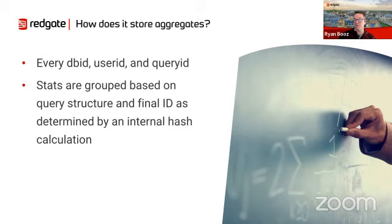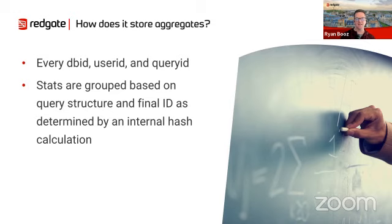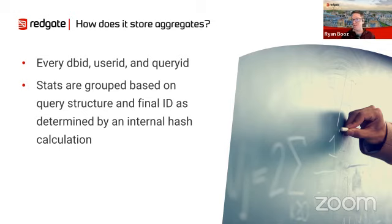Now let's look at PG stat statements, what most people will use day-to-day to debug their application. It stores aggregates based on the database ID, user ID, and query ID. The query ID is a hash based on a parameterized version of that query. If you have a query that's very similar but you're dynamically adding a different where clause, you'll end up with multiple query hashes — we're hashing the actual text, so modifying the where clause gives a different hash even after parameterization.